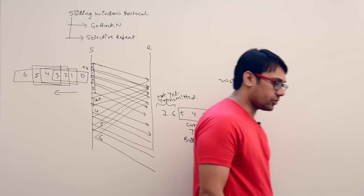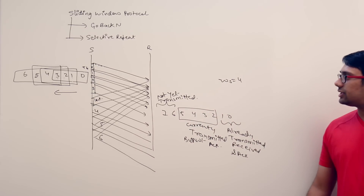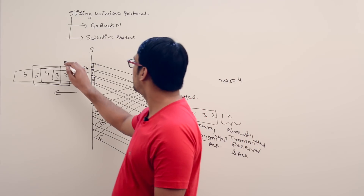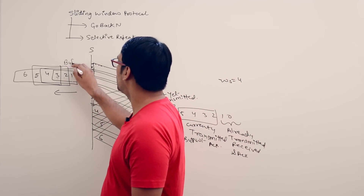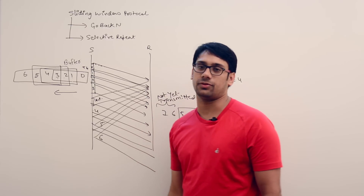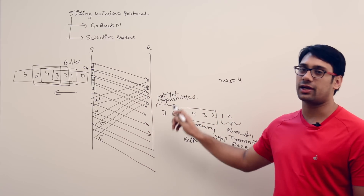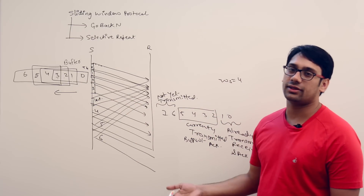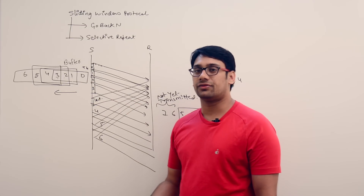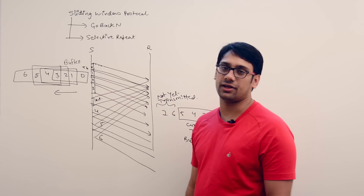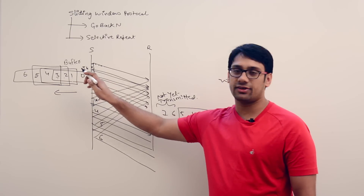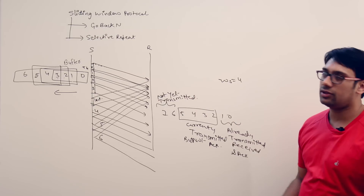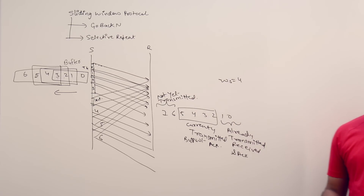This is the sliding window protocol. This window acts like a buffer which stores the packets currently being transmitted. If any one of these packets is discarded — for example due to a network error — we need to transmit those packets again. We store them inside the buffer so we can retransmit in any condition where something goes wrong.